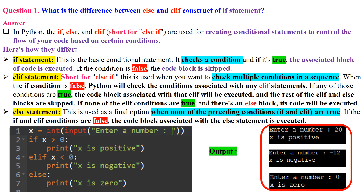In this example, if x is greater than zero, the first block of code will be executed. If x is not greater than zero but is less than zero, the second block will be executed. If neither condition is true, the else block will be executed. You can check the output for positive, negative, and zero values on the right side of the screen.